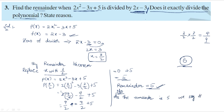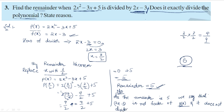As the remainder is 5, we say that 2x minus 3 is not a factor of p of x. Since the remainder is not 0, 2x minus 3 is not a factor of p of x, and it does not exactly divide the polynomial.